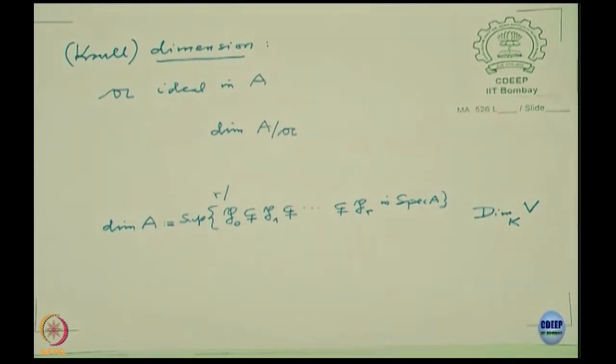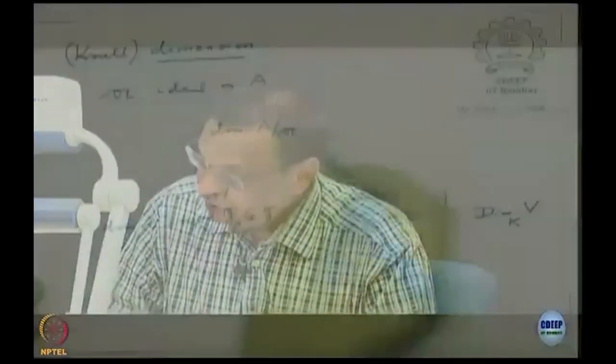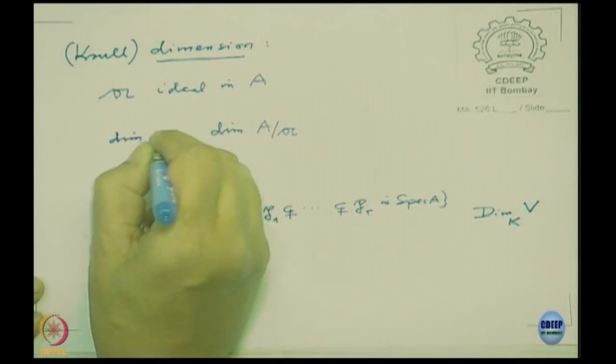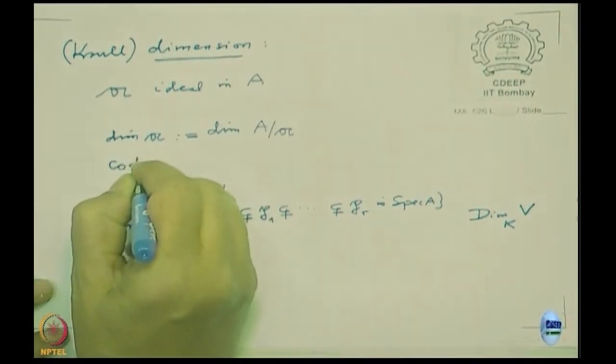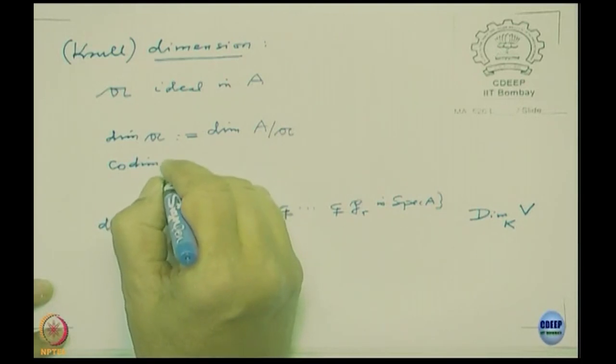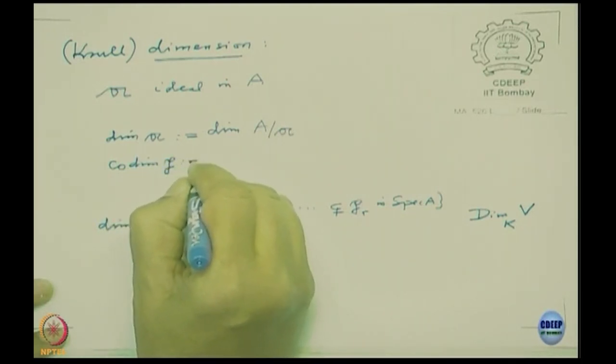First I will take up the case where the rings are polynomial rings over a field, or more generally rings of finite type over a field. Then I will do local rings, and then a general dimension theorem for Noetherian rings. Now if we have an ideal a in A, the dimension of the ideal is by definition the dimension of the residue class ring A/a. The codimension — codim — is first defined for prime ideals: the codimension of a prime ideal p is by definition the dimension of the local ring A_p, which equals the supremum of lengths of chains of prime ideals contained in p.